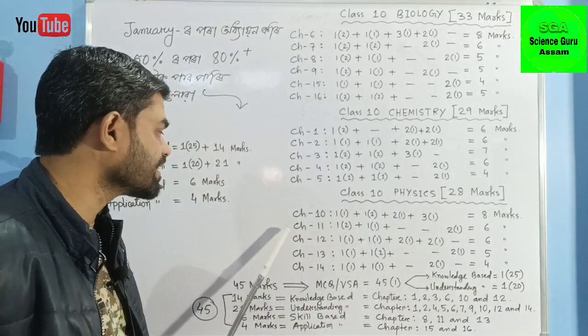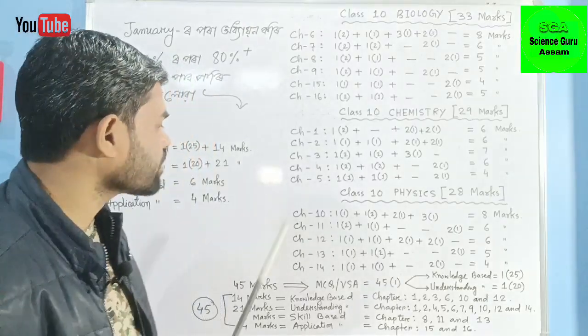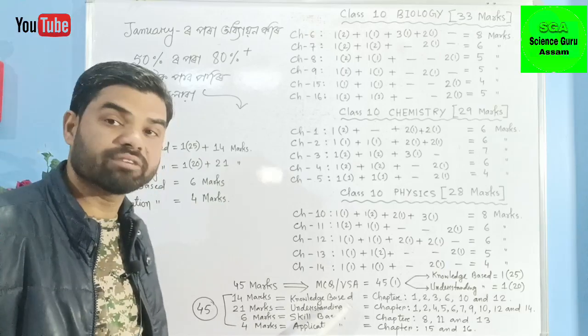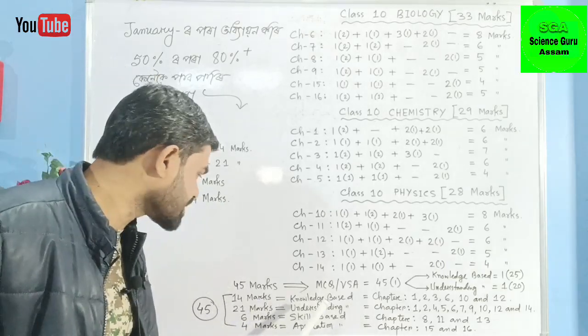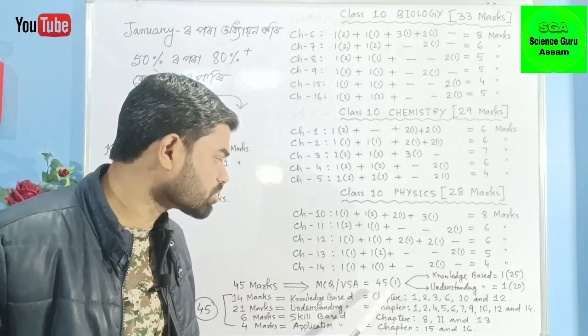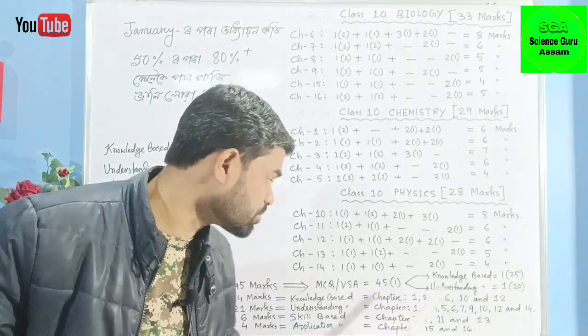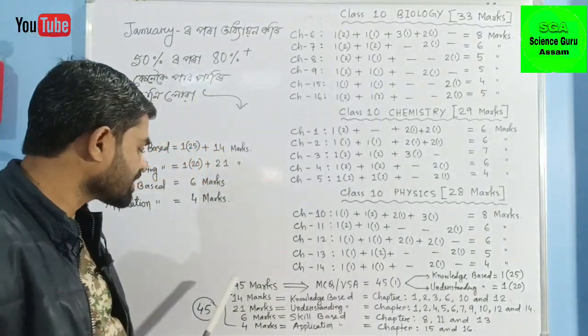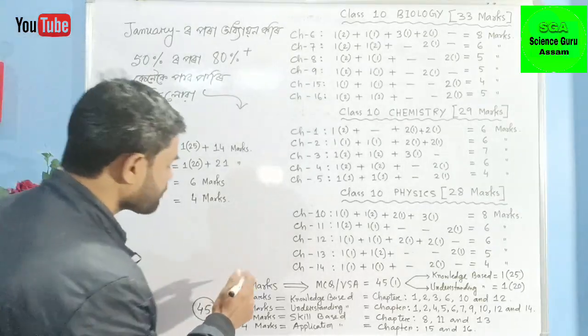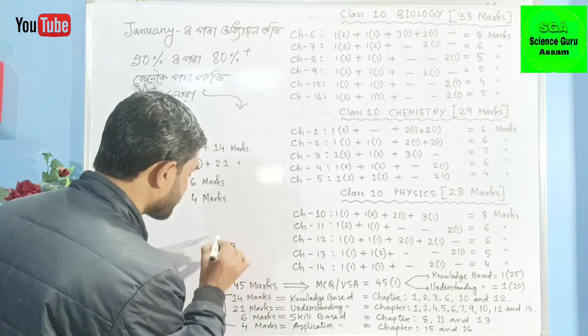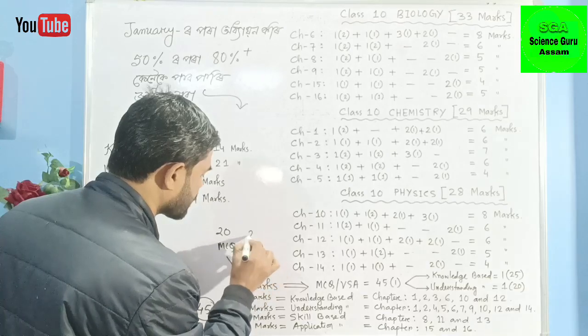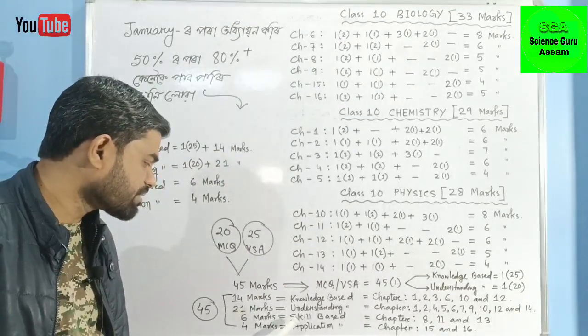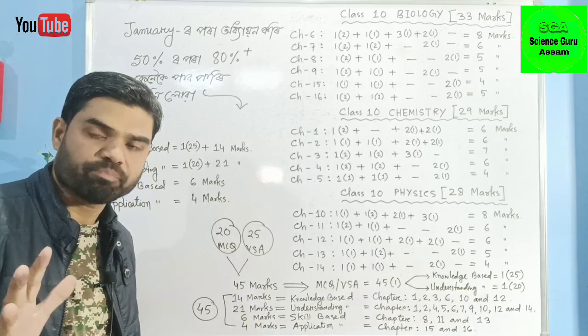From chapters 10, 11, 12, 13, and 14, there are 90 marks total with 10 marks for internal assessment. Out of 90 marks, 45 marks are from MCQ and VSA type questions. These 45 marks include knowledge-based and understanding-based VSA questions.